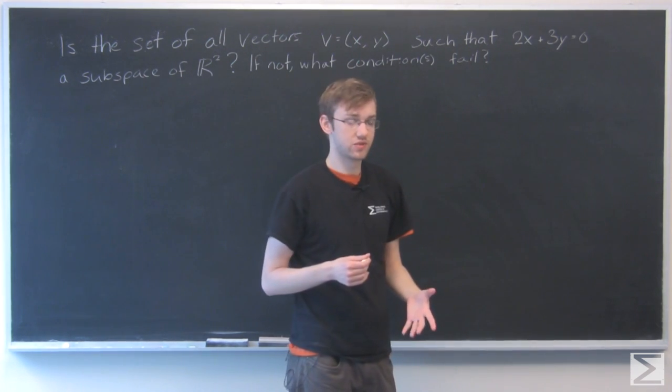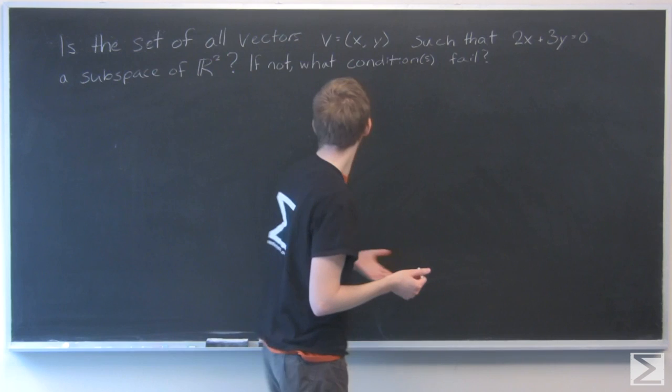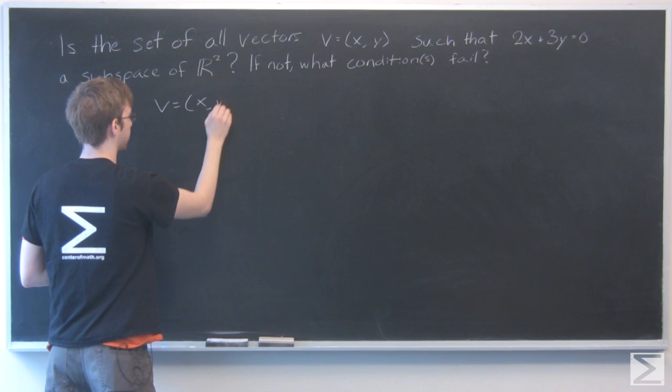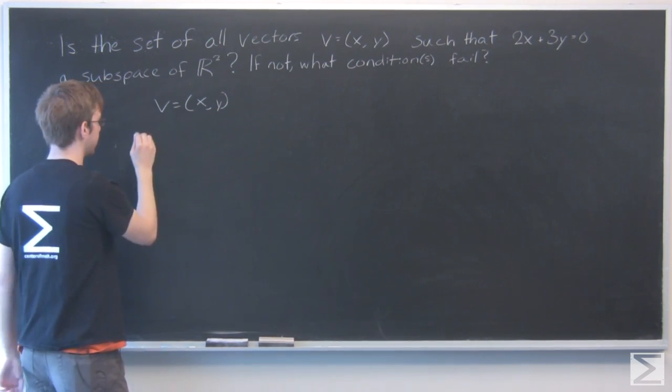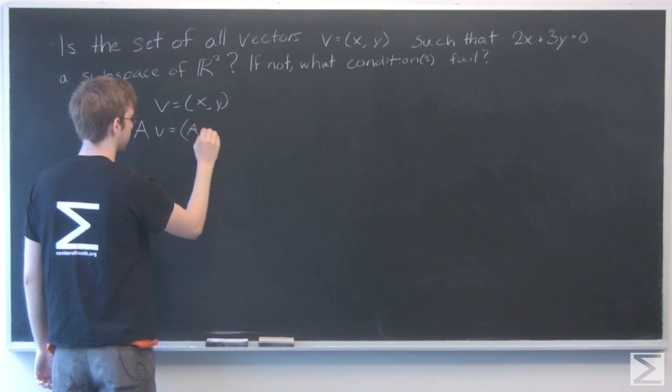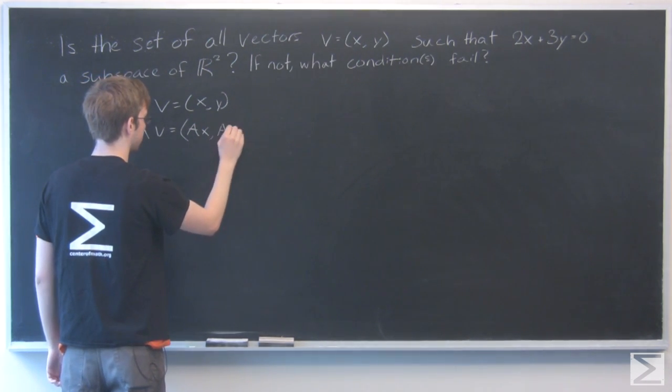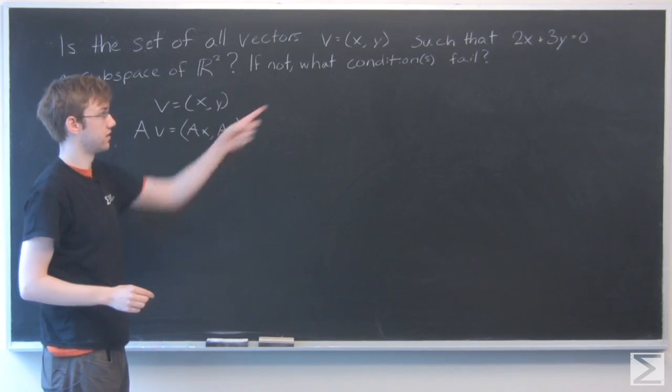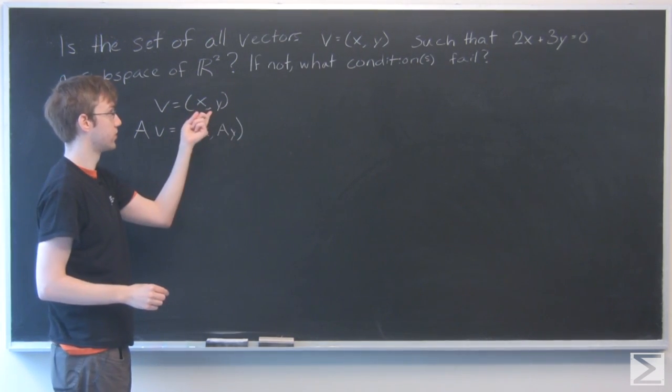Let's first check if it's closed under scalar multiplication. If I have my vector (x, y) and multiply it by a scalar a, I get (ax, ay). Now let's see if that equation will still hold, given that it holds for x and y.